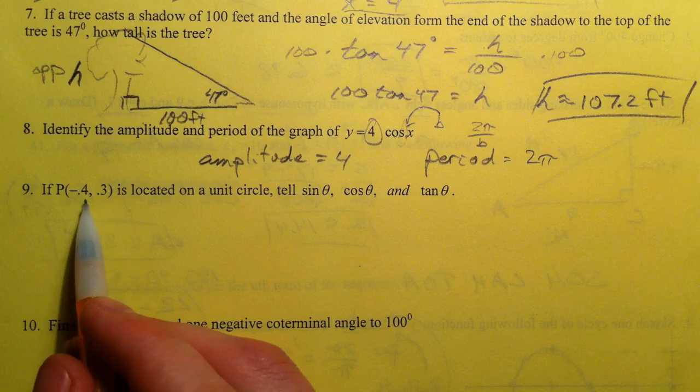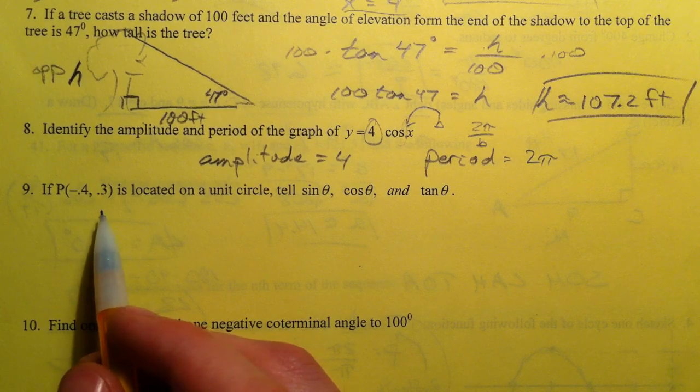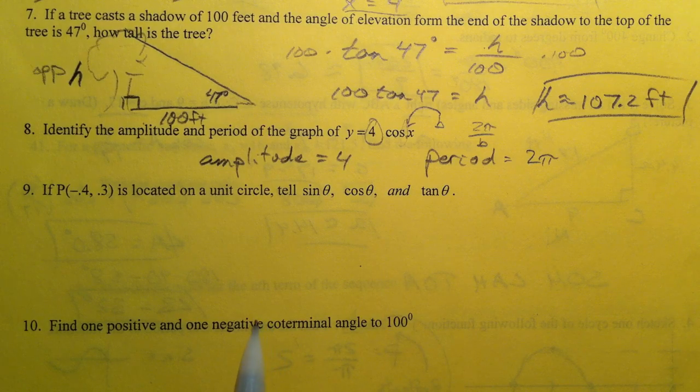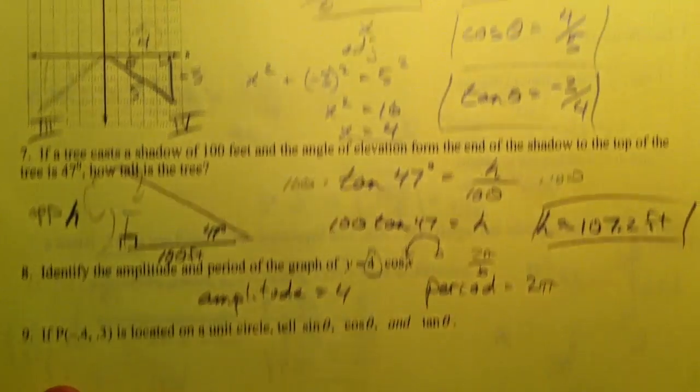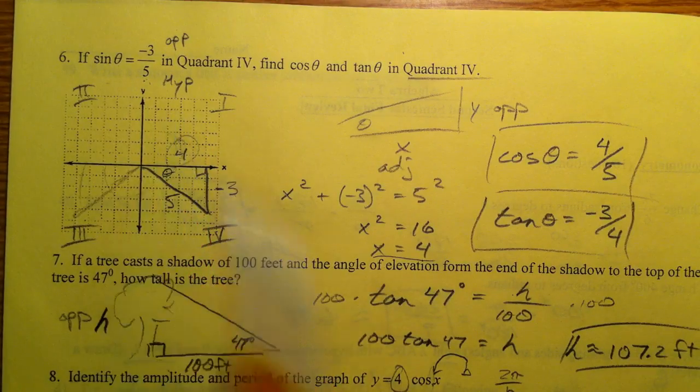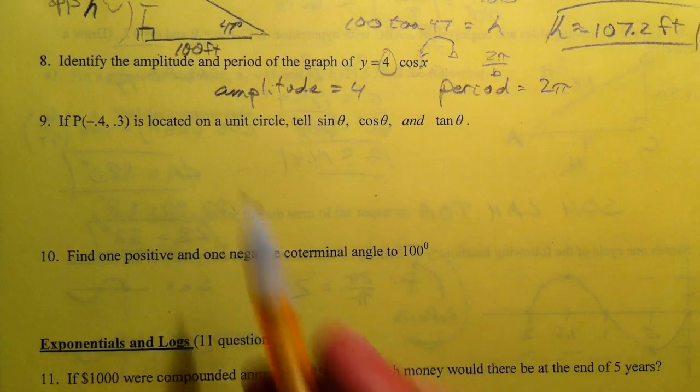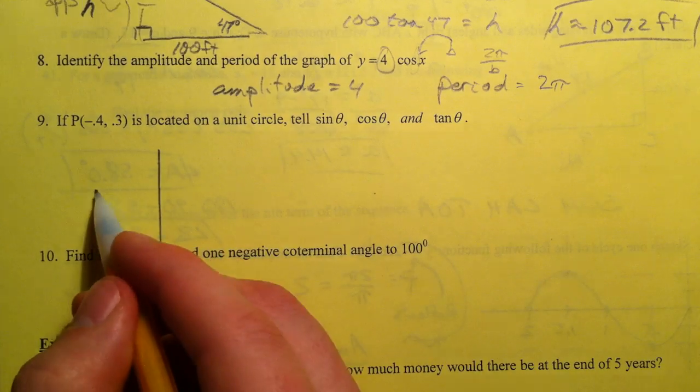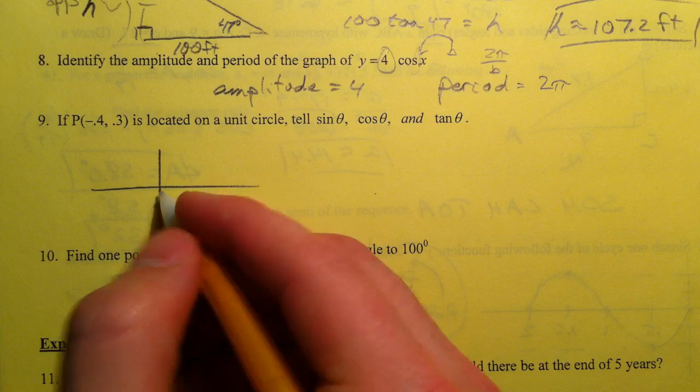Alright. If point P negative point 4 point 3 is located on the unit circle tell what sine cosine and tangent are. Now this looks strikingly similar to 6. This unfortunately is not actually on the unit circle. And I'll show you why.